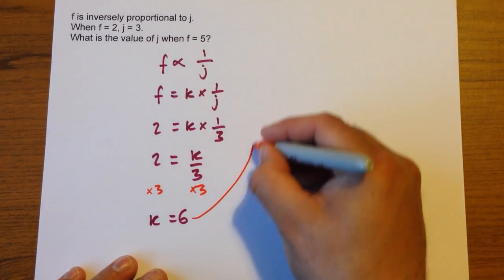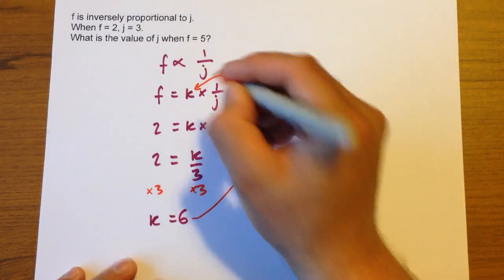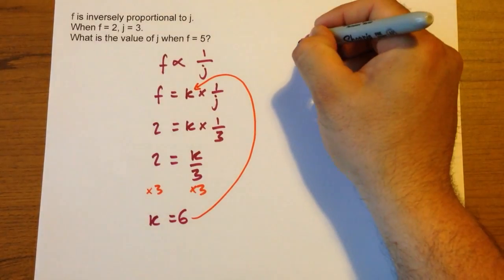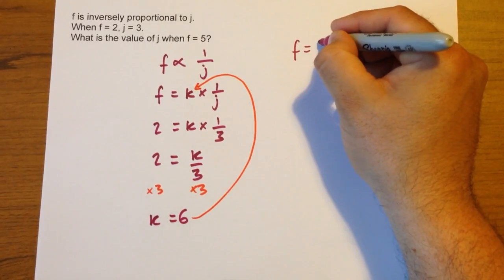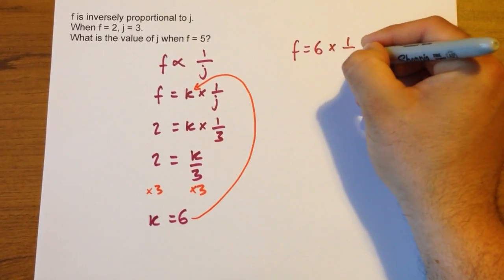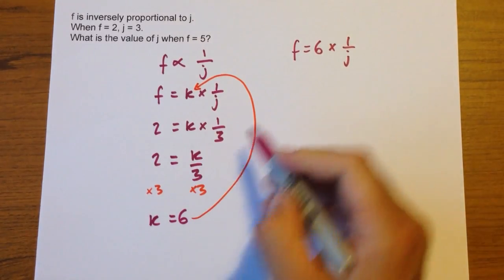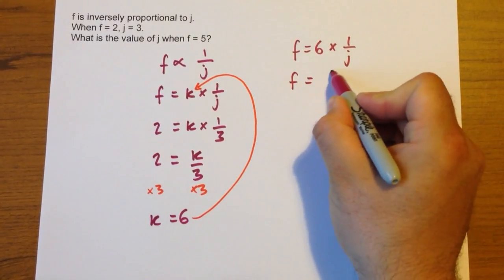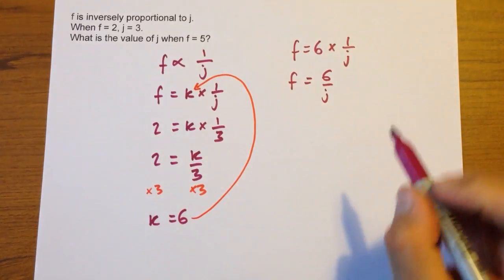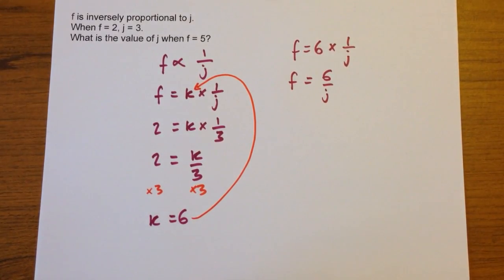Now you substitute that value back in and you've got f equals 6 multiplied by 1 over j. And again I'd probably write that in this format here, I would write f equals 6 over j, just because it's easier to manipulate.